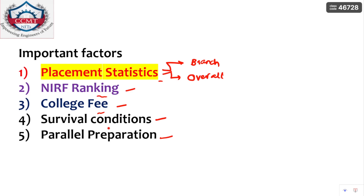The next factor is survival conditions. Many people live in certain conditions at home and then shift to very different environments. Check whether those conditions suit your body. For example, if you are living in hot climatic conditions in South India and you get a college like NIT Hamirpur, it will be very cold there, and your body may or may not handle it. Also, if you want to stay near your hometown, pick a NIT nearby.